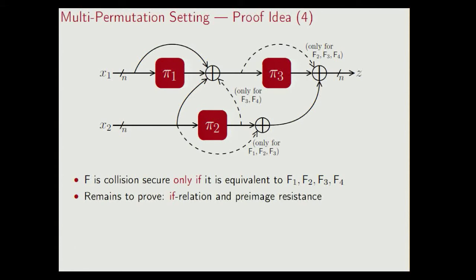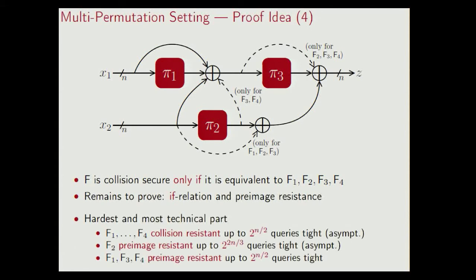For collision resistance, we proved that F1, F2, F3, and F4 are indeed optimally collision secure, up to 2^(n/2) queries in the limit. For pre-image security, we proved that F2 achieves pre-image resistance up to 2^(2n/3) queries, which is optimal due to the bound of Roggewie and Steinberger from Eurocrypt 2008. Finally, for F1, F3, and F4, we proved a tight 2^(n/2) pre-image security.